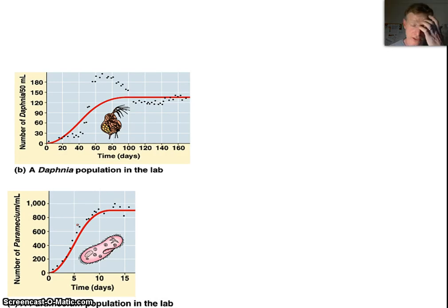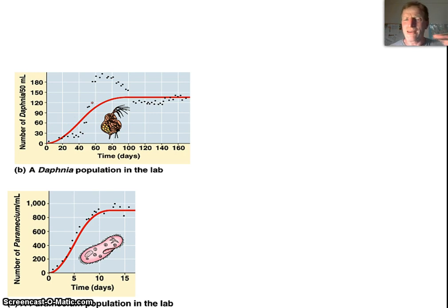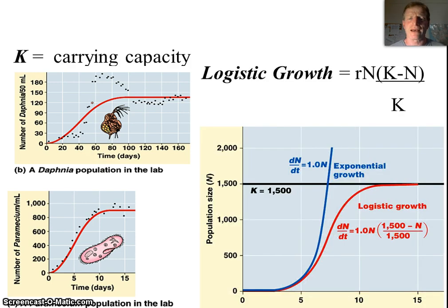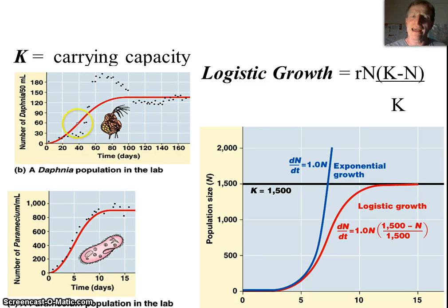Some examples of population growth: we have paramecium here growing, and we have daphnia, or water fleas, growing. We can see that they don't grow exponentially indefinitely — they reach some kind of a level, and that level we call a carrying capacity. That's the amount of individuals that can be supported indefinitely in that given area. The growth we see is sometimes called an S-curve, and the mathematical term for it is logistic growth.